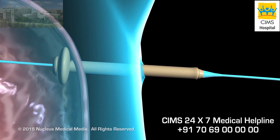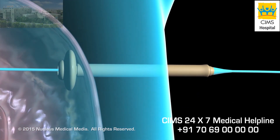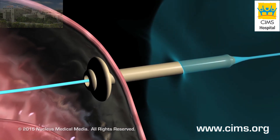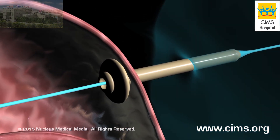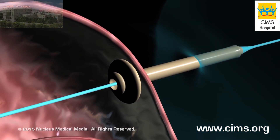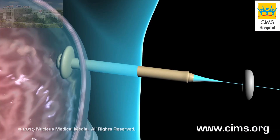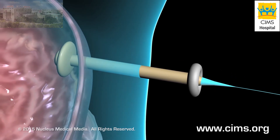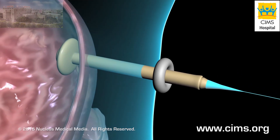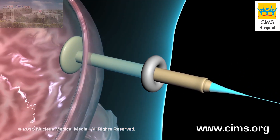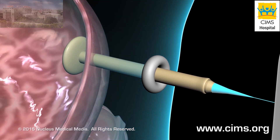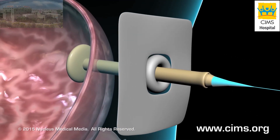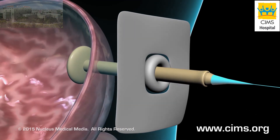A soft, round bumper attached to the portion of the tube that remains inside the stomach secures it in place. The outer portion of the tube will be secured with a bumper as well, and sterile gauze will be placed around the incision site.